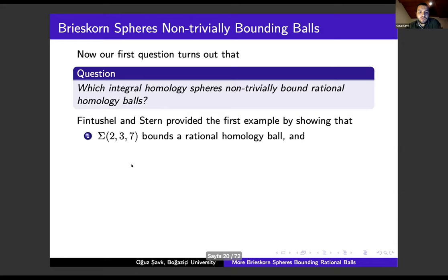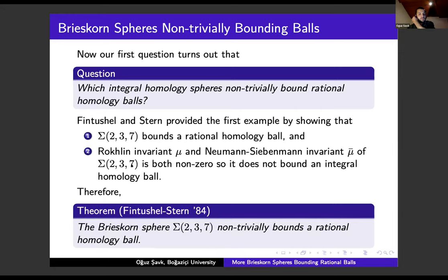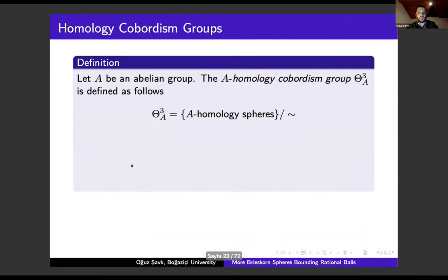Which integral spheres non-trivially bound rational balls? Fintushel and Stern provide the first example by showing that the Brieskorn sphere Σ(2,3,7) bounds a rational ball. They computed its Rochlin invariant and found it is non-zero, so this sphere non-trivially bounds a rational ball.